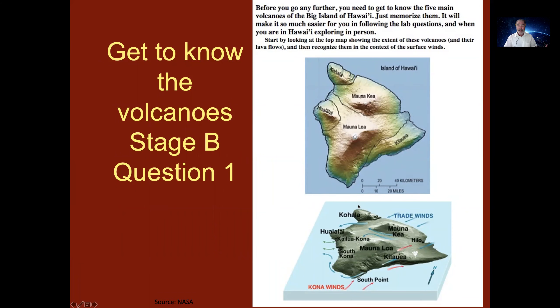The first thing you need to do before you even start question one Stage B is to get to know the five main volcanoes of Hawaii. That's prerequisite information for you to move forward and just memorize them. You'll need to know this throughout the entire lab.